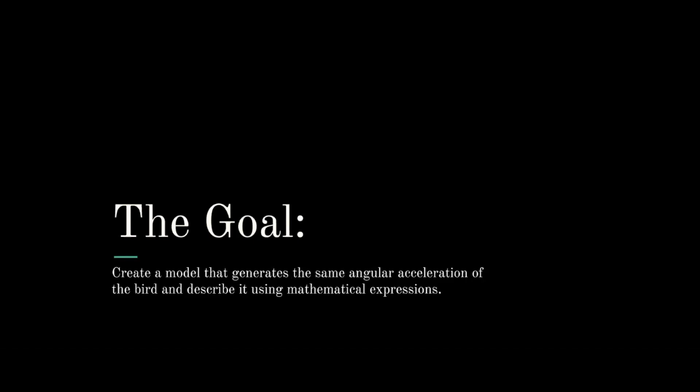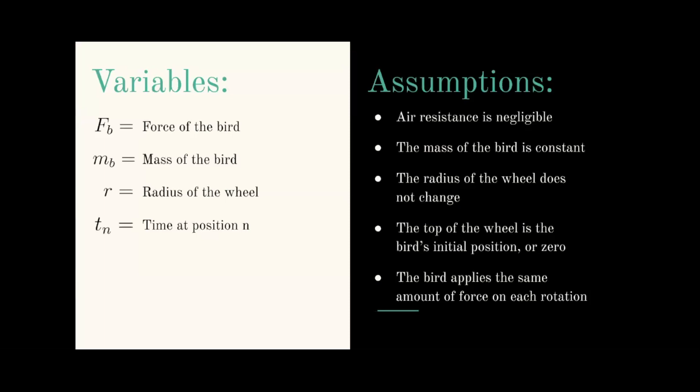The variables we have are f_b, which is force of the bird; m_b, which is mass of the bird; r, which represents radius of the wheel; and t_n, which is time at position n.